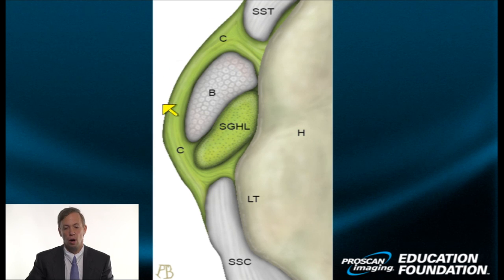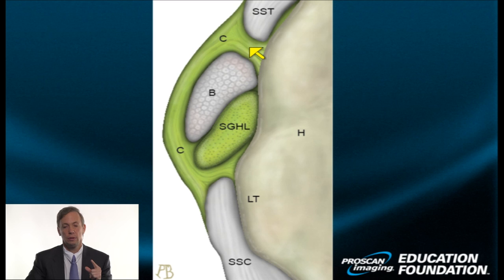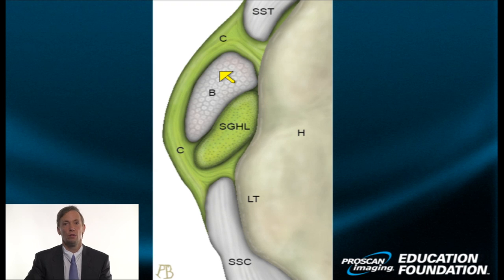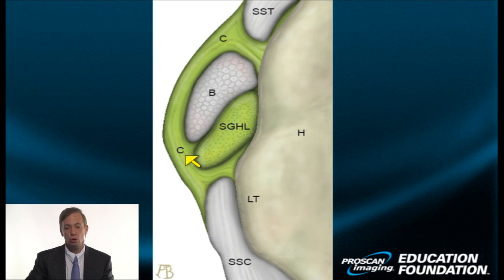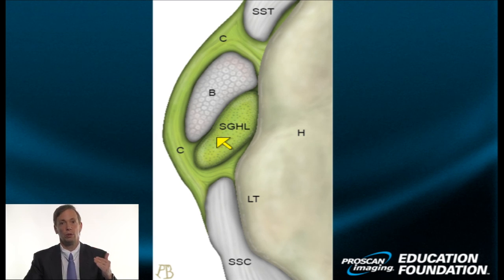We've magnified the small anterosuperior area. Coursing through this fibroelastic interval is the biceps tendon as it makes its arcuate descent from the superior tubercle of the glenoid to leave the joint. It is secured in this interval by a thick fibroelastic condensed structure called the coracohumeral ligament, depicted here in green. It is also supported along its undersurface by the superior glenohumeral ligament for much of its more peripheral location.